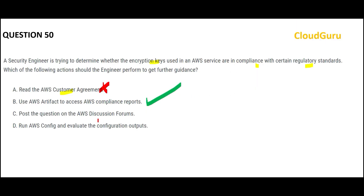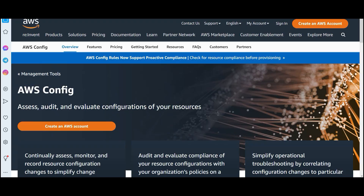Option C is a bit crazy because they are telling you to go to discussion forums and post a question. AWS will not give you such things — you don't ask other people, they already have a sorted environment with lots of services and features. The question is not talking about any configuration, so AWS Config is not the answer here.